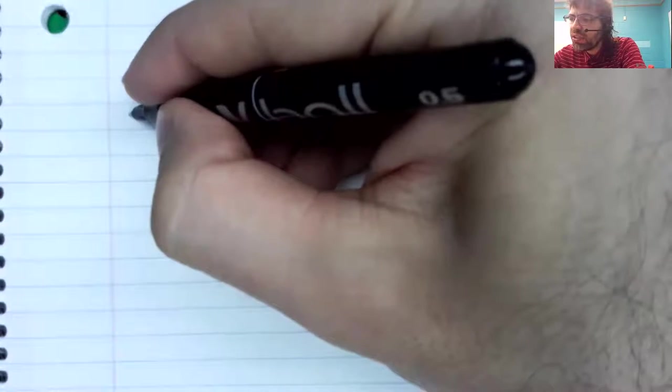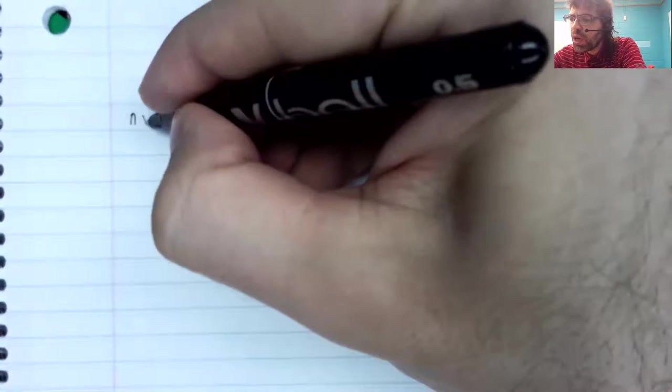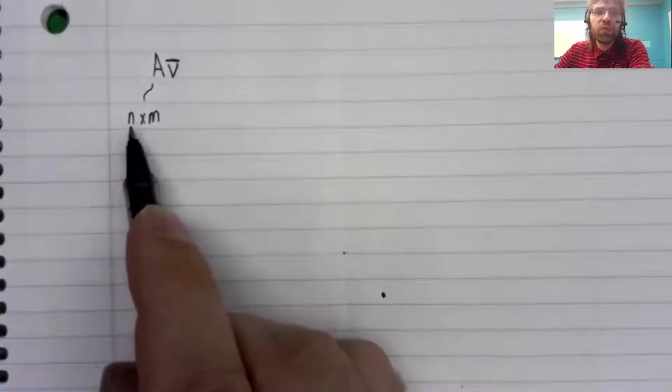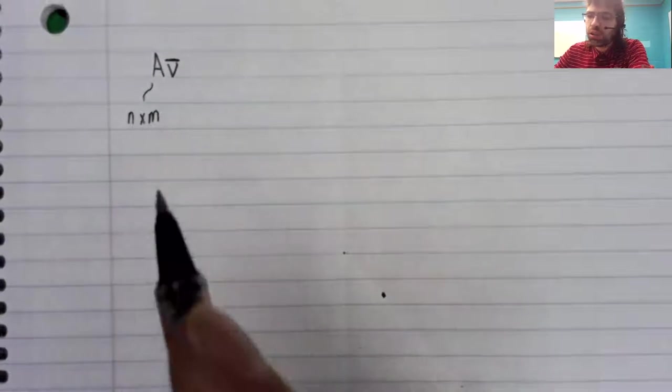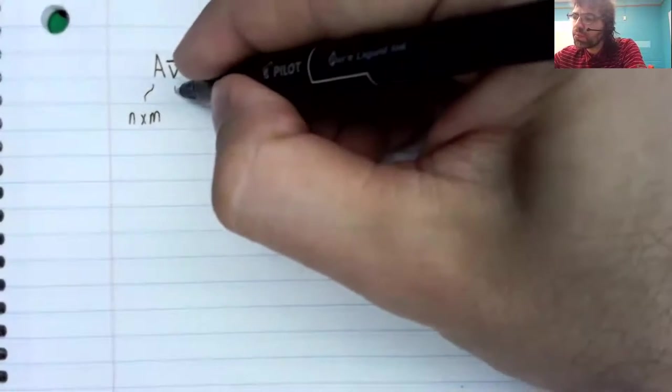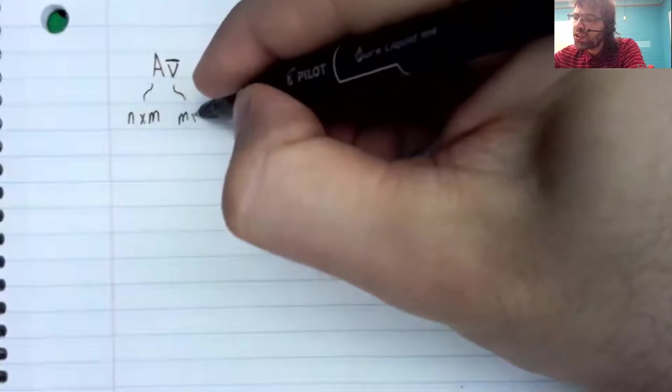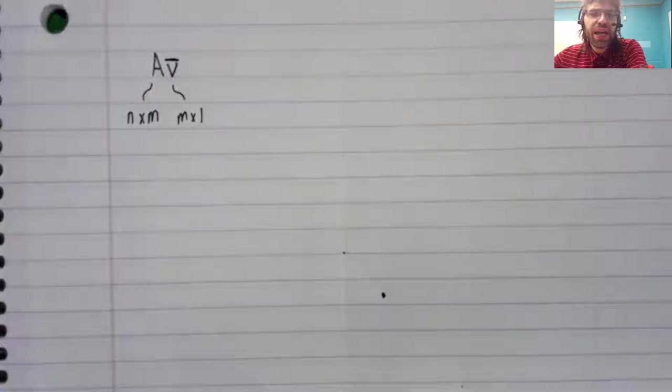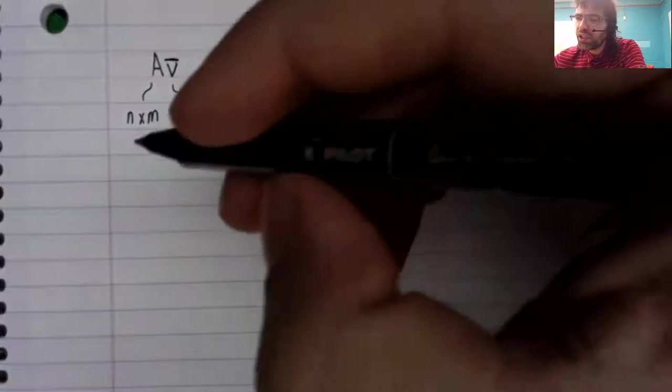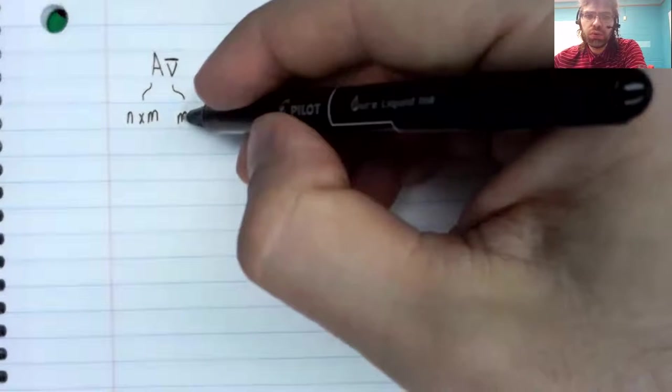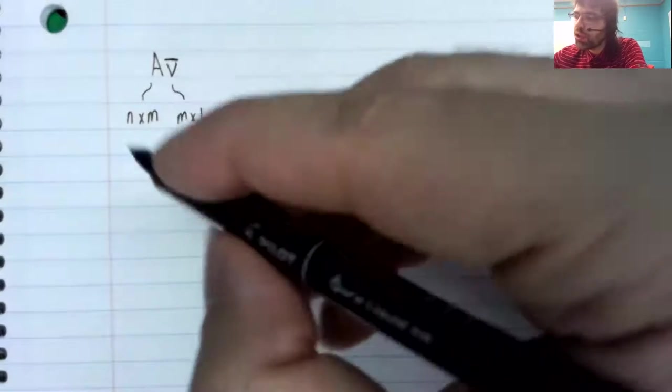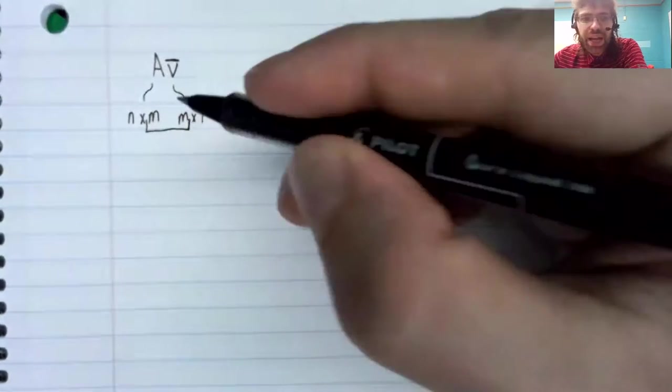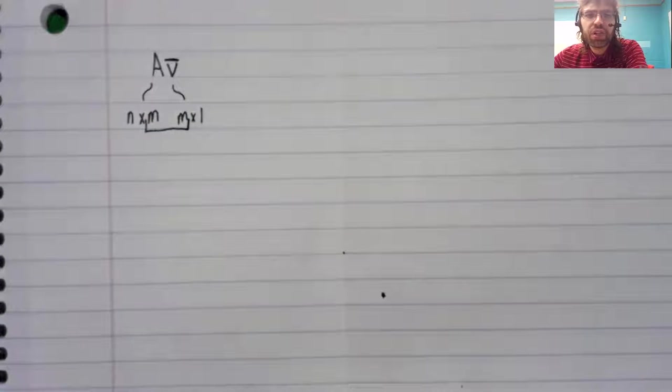In particular, let's say A is n by m. So n rows, m columns. Then this vector has to be m by one, m rows, one column. And you see these m's have to match.